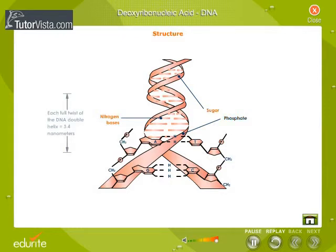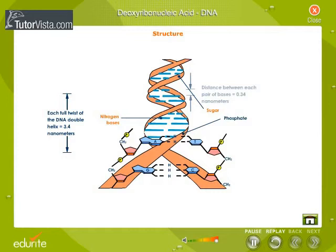The sugar and phosphate backbone is on the outside of the double helix, whereas nitrogen bases are stacked inside. The two strands of the helix are held together by specific base pairing. An adenine molecule in one strand is paired with thymine in the other strand. Guanine is paired with cytosine. One complete turn of a helix has 10 base pairs.